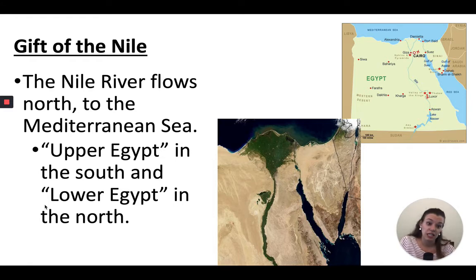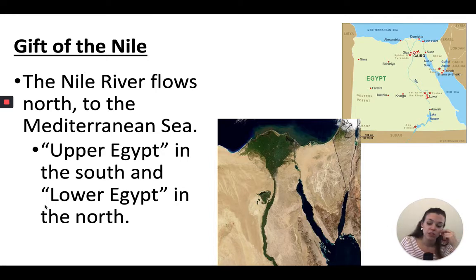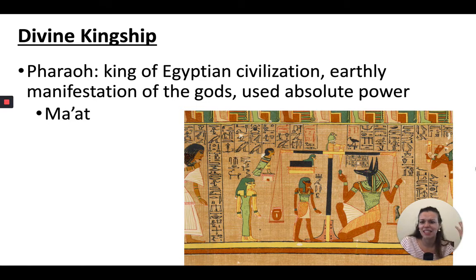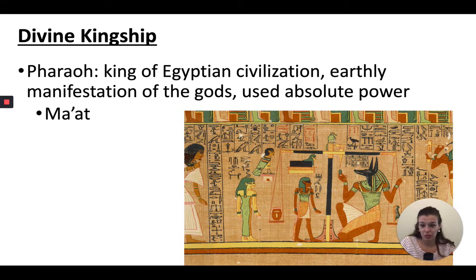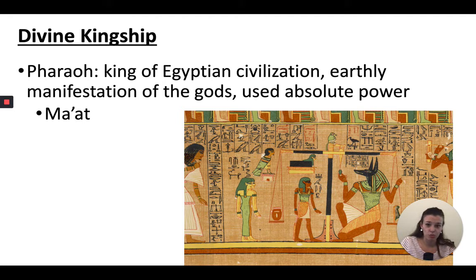The Nile River also produces other resources for Egyptian society: reeds, stones, clay, papyrus. When we think of ancient Egypt, we all think of the pharaohs — this divine kingship. Well, 'pharaoh' is actually a term that Egyptians wouldn't necessarily use to refer to their kings. It's a term used in the Hebrew Bible to refer to a specific Egyptian king, and in English we've just adopted this term for all Egyptian kings.